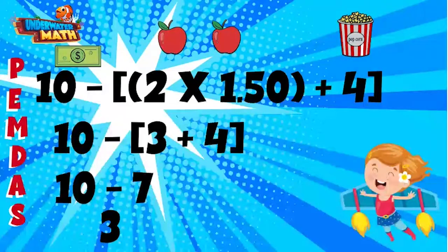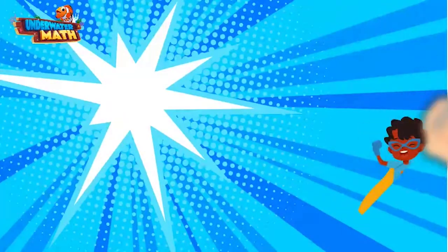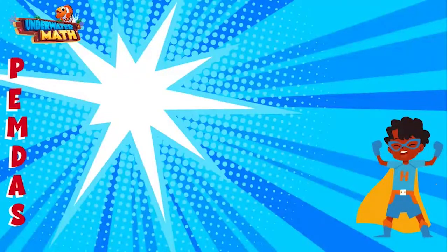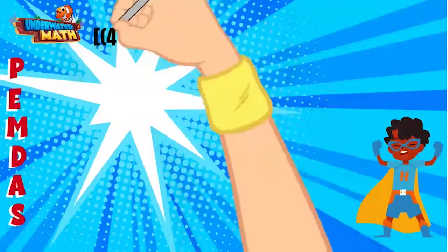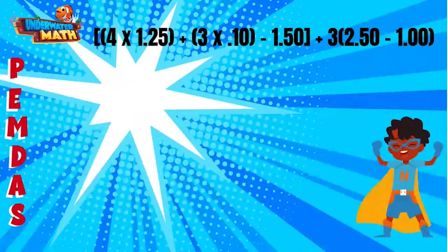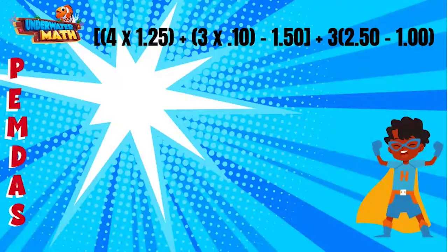This expression simplifies to three. This is my friend Henry. He's a super math student and is going to help with our next problem. What's up, super kids? Let's try out this problem. You might be thinking: Henry, this problem has parentheses, brackets, and decimals, and I don't even know where to start. Take a breath — this problem is the same as the other problems we have solved together, and we have PEMDAS to help us out.